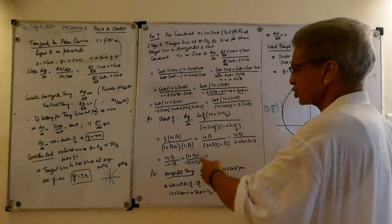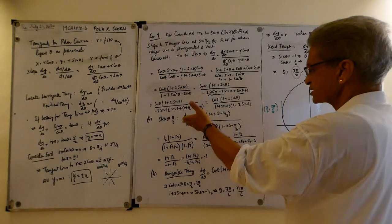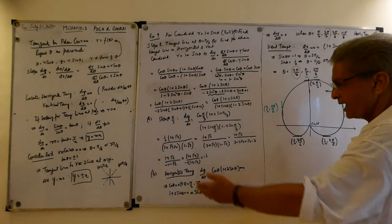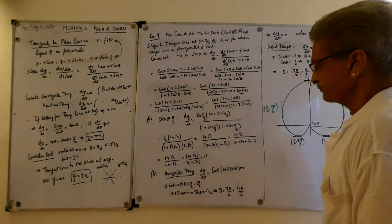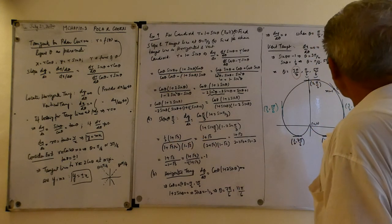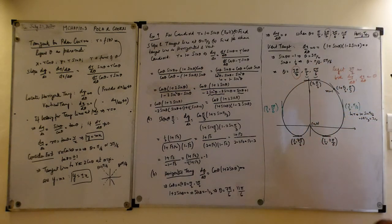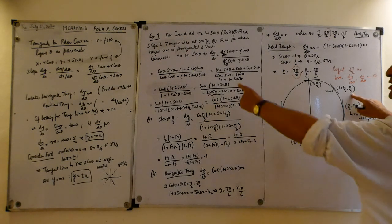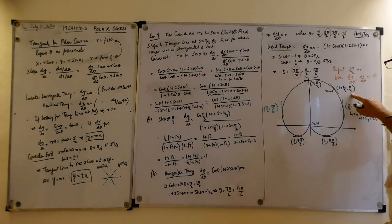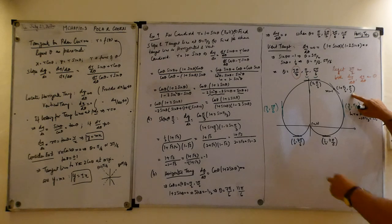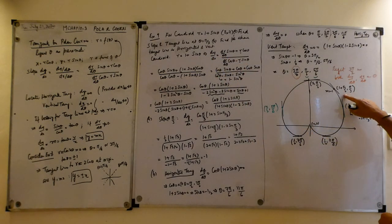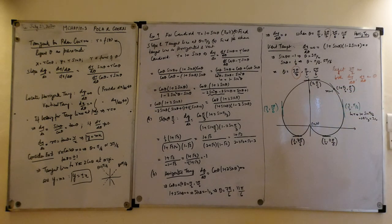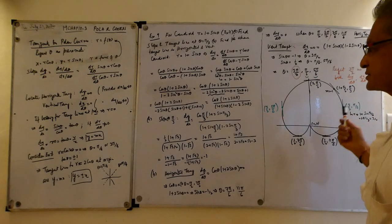Now, to find the slope at θ = π/3, I substitute into the slope formula and simplify, getting equal to minus 1. You can see in the figure the slope is minus 1 at angle π/3. When you know θ = π/3, you can determine r from r = 1 + sinθ: sine(π/3) is √3/2, so r equals 1 plus √3/2.